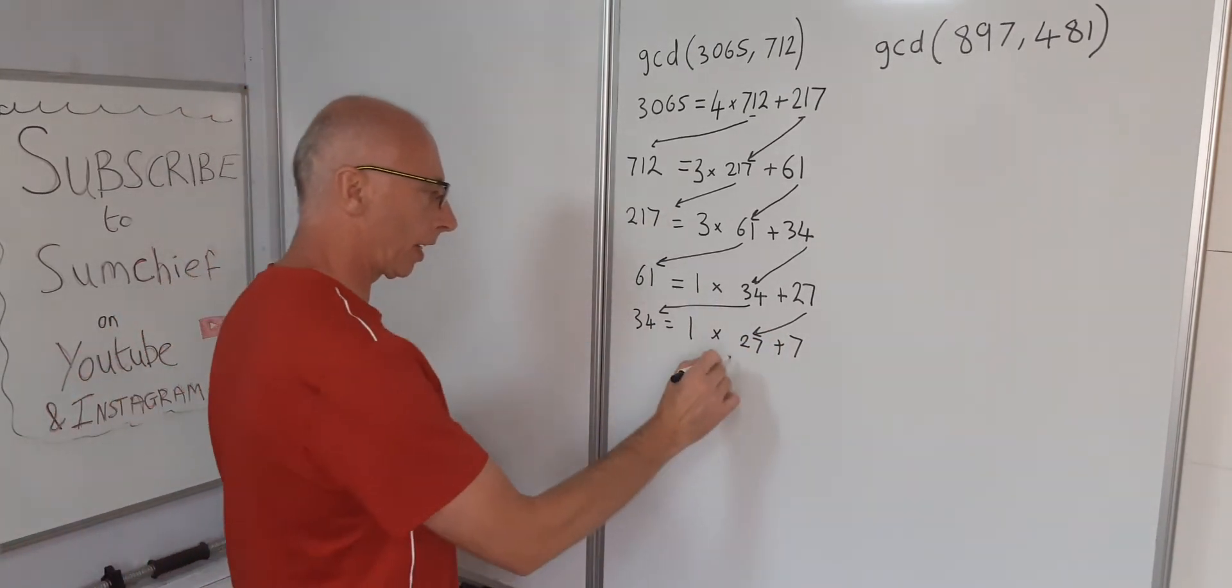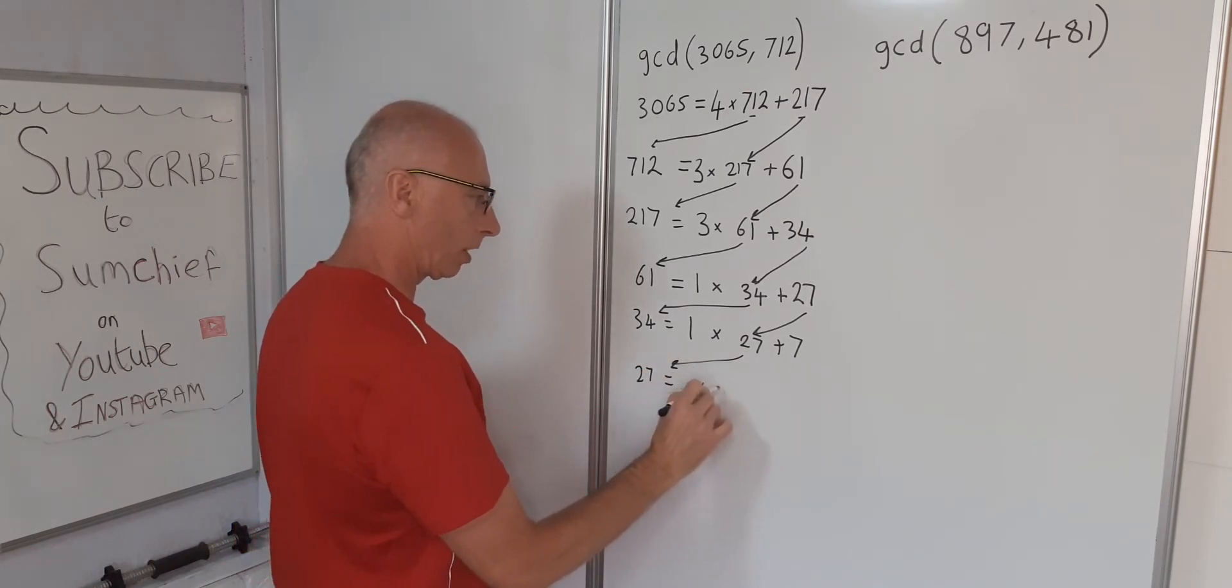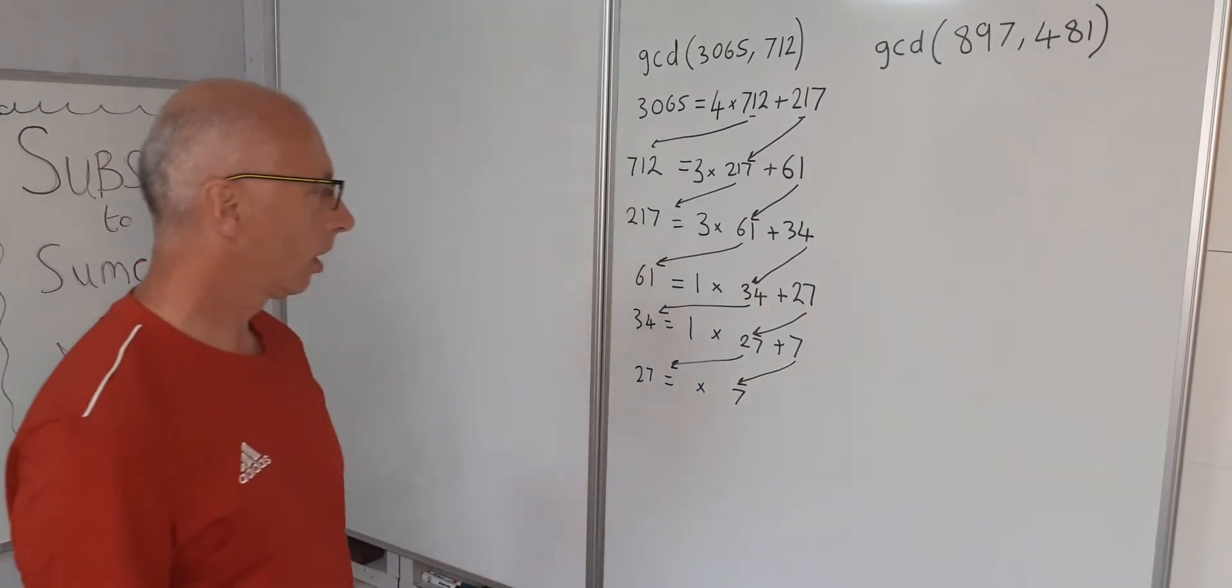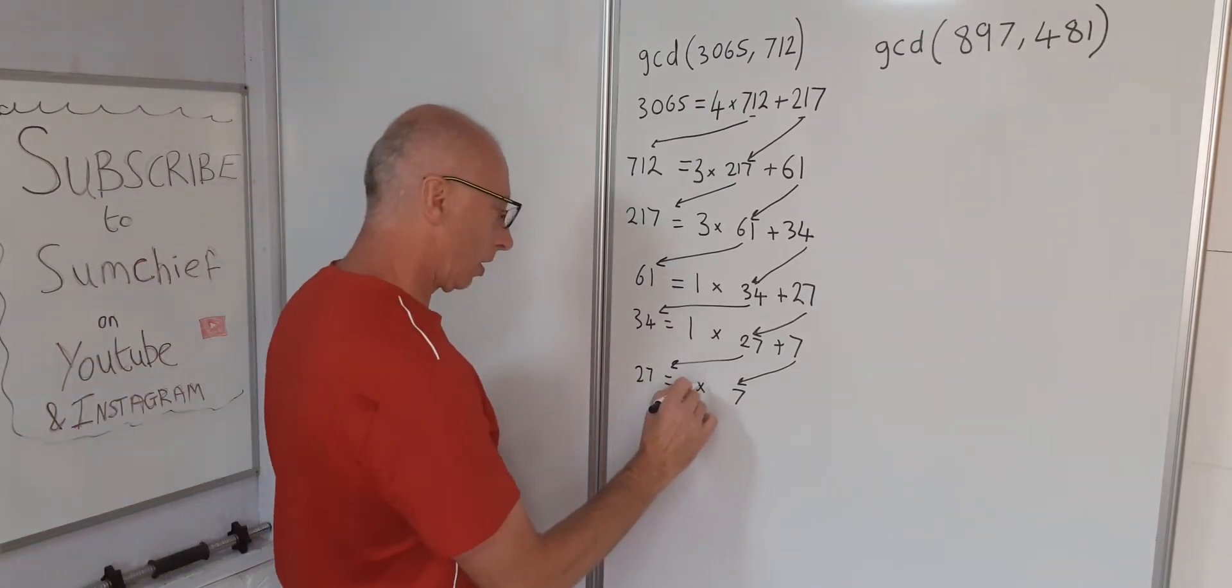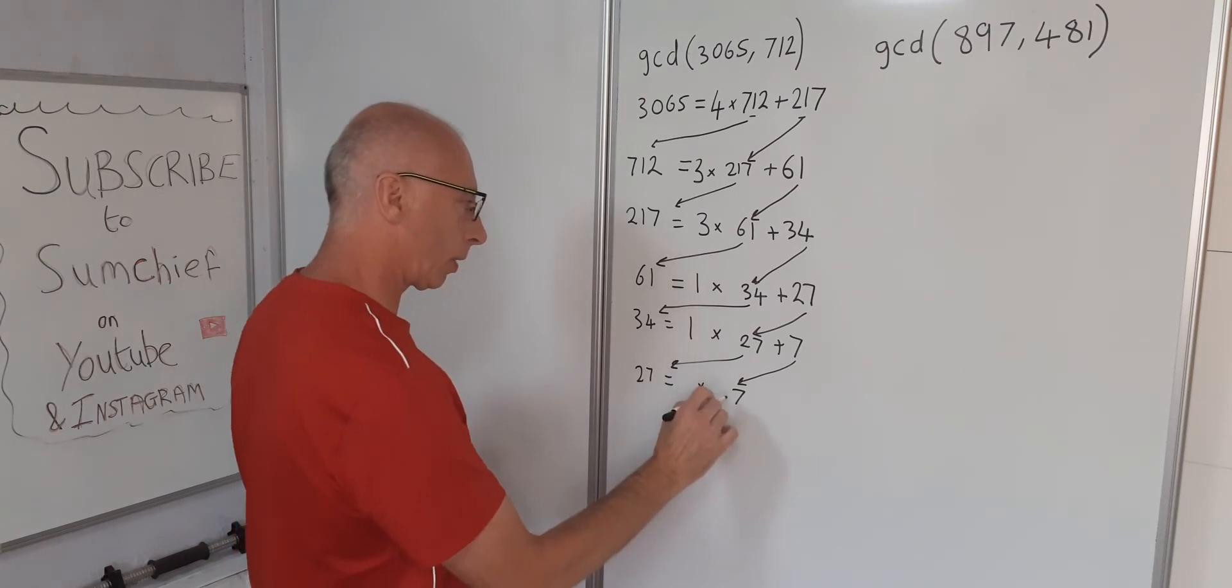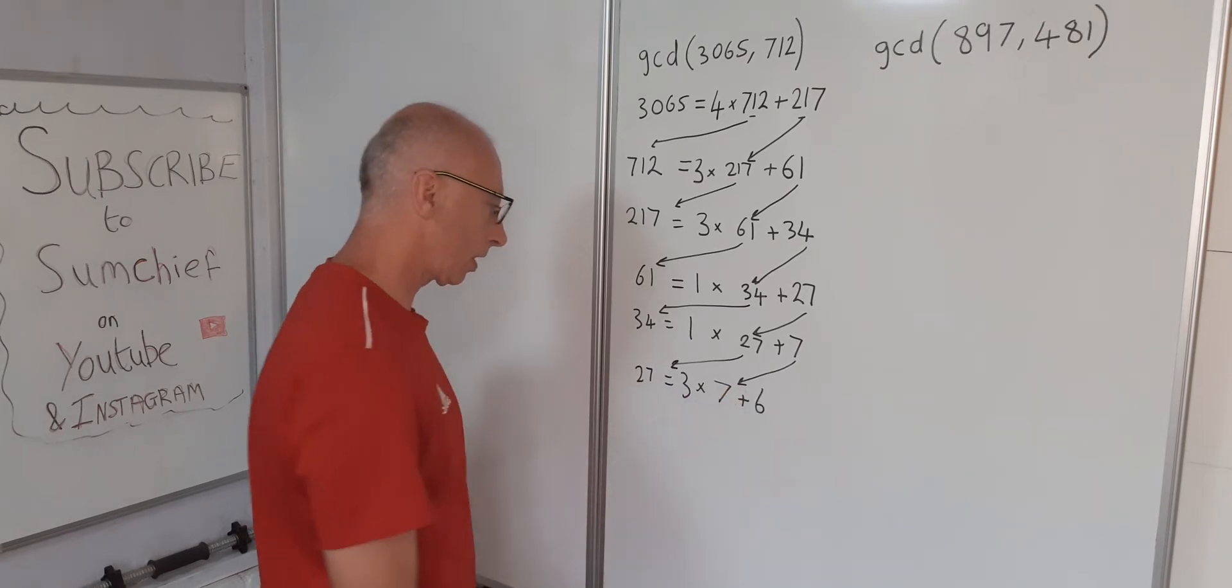Keep going. 27 equals something times 7. 7 times 3 is 21, so 7 times 3 is 21 plus 6 left over.